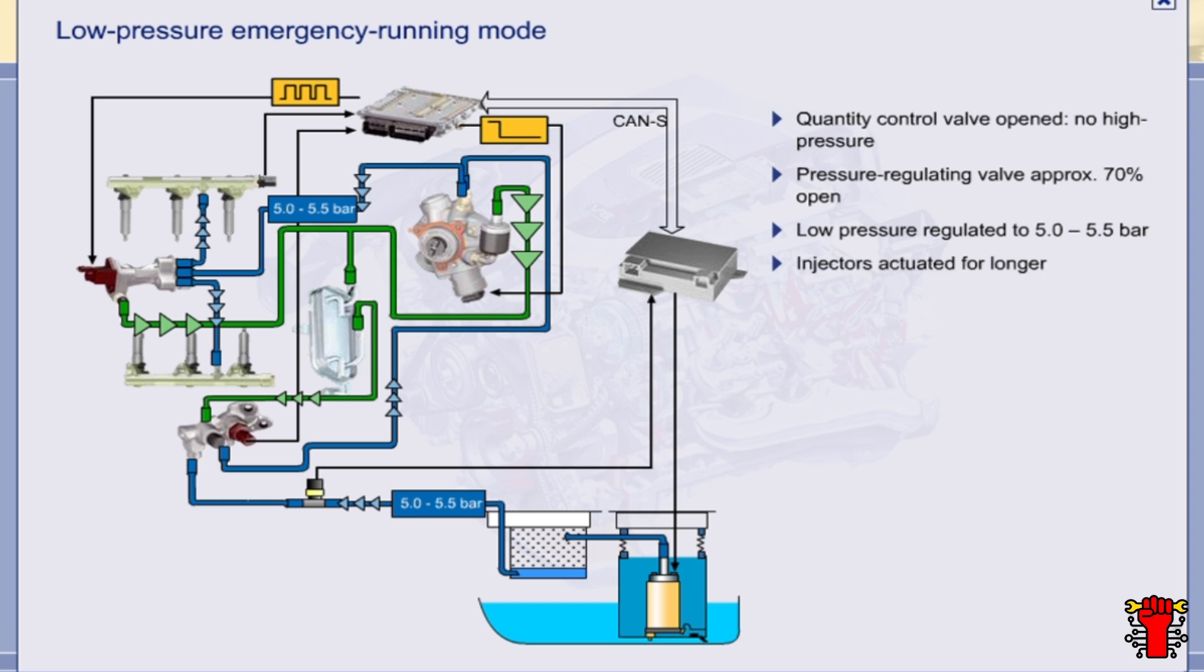The low rail pressure is compensated for by actuating the injectors for a longer period. The stratified charge mode is not permitted during low pressure emergency operation. Engine power is reduced to the extent that it is only possible to achieve a top speed of 70 km per hour.